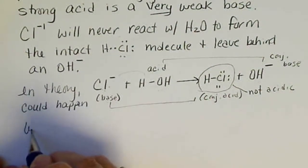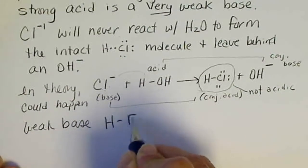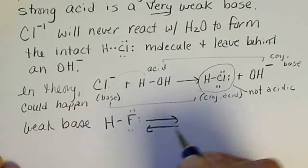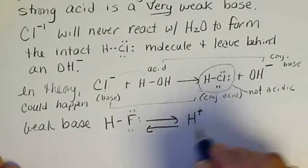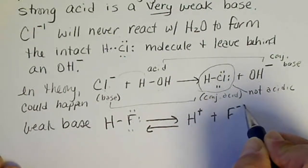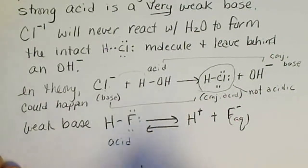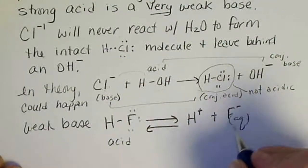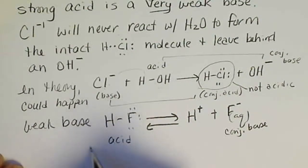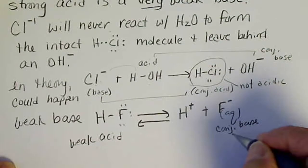If we look at a weak acid — for example, hydrofluoric acid — this reaction does set up an equilibrium. Only some of the molecule breaks apart to form H⁺ and the fluoride ion. Here is the acid, and this is the conjugate base. So a weak acid will have a stronger conjugate base.